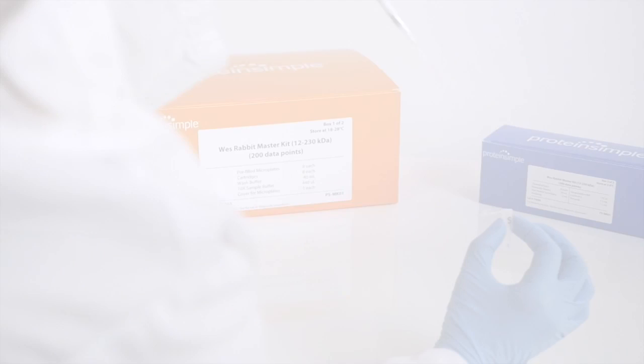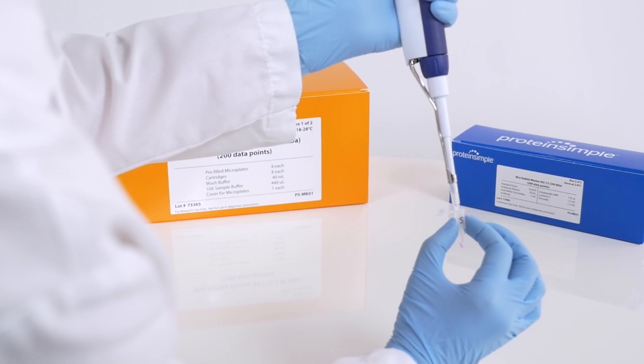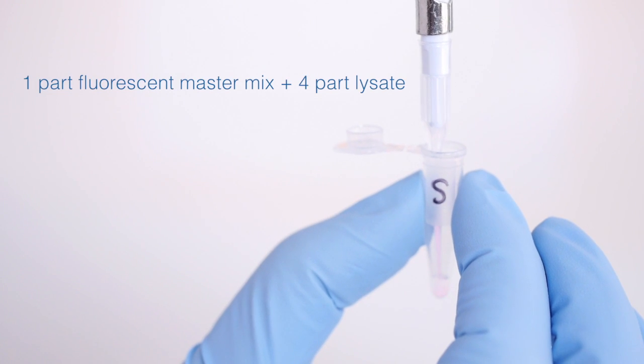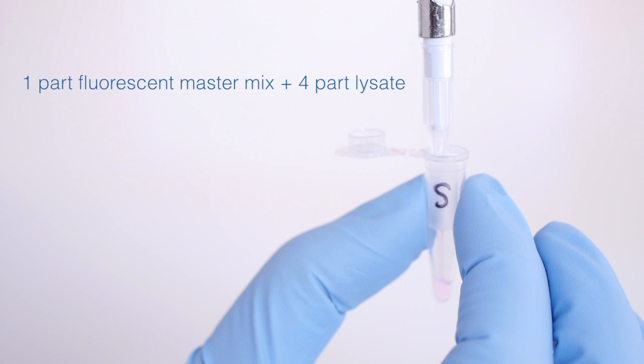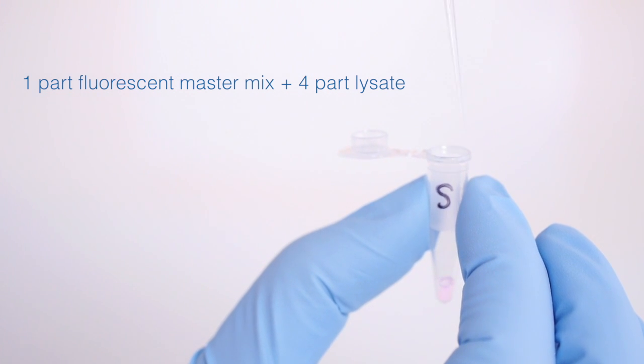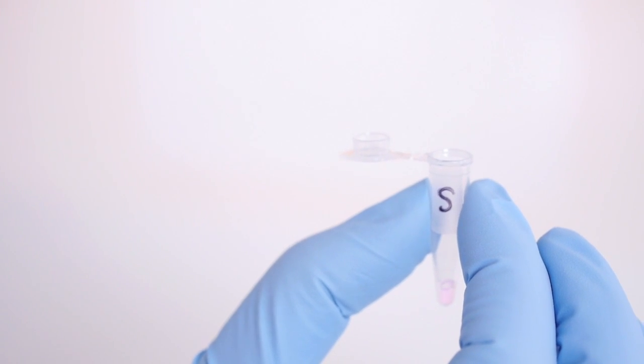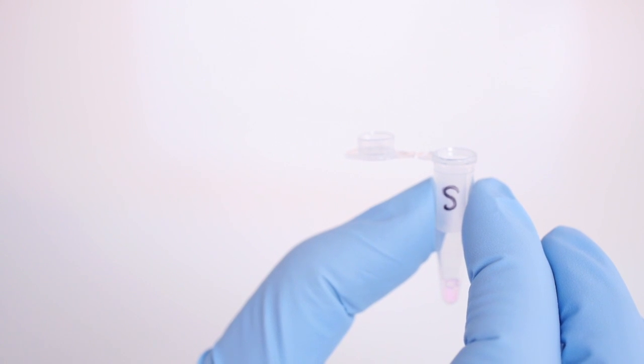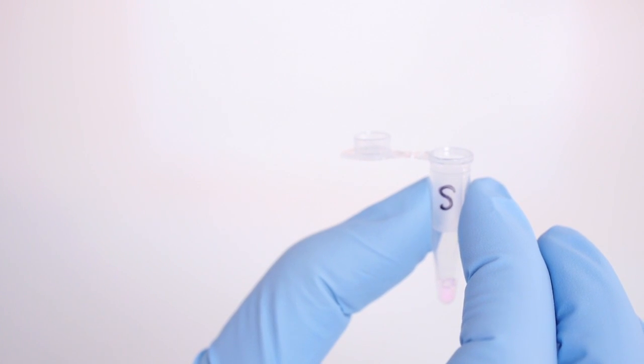Okay, let's get started on preparing your samples. Combine one part 5X of the Fluorescent Master Mix with four parts of your lysate in a microcentrifuge tube. The final concentration of your lysate will be assay dependent, but we suggest starting with 0.2 milligrams per milliliter if you're running a brand new assay.